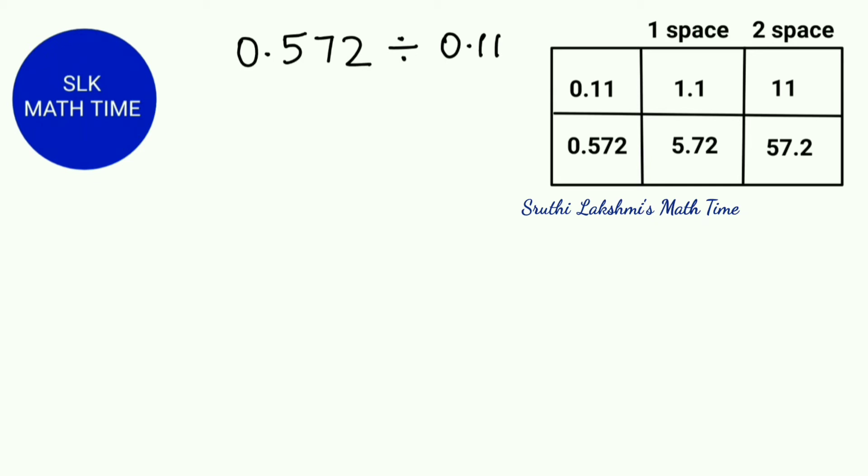So in this case, we have shifted the decimal point in our divisor two spaces to the right. So that makes our divisor 11. But remember, we can only do that as long as we also shift the decimal point in our dividend by the same amount to the right, which makes our dividend 57.2.